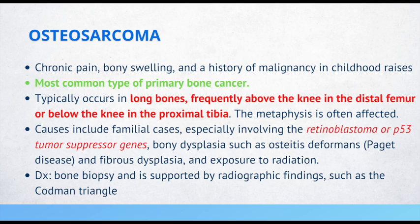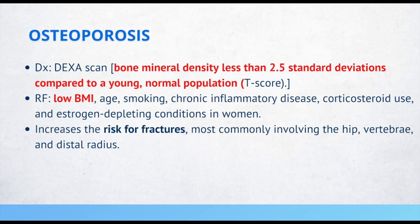Osteoporosis. A DEXA scan reveals bone density less than 2.5 standard deviations compared to a young normal population. Risk factors include low BMI, age, smoking, chronic inflammatory disease, corticosteroid use, and estrogen-depleting conditions in women. The top risk factor is low BMI, so if asked for the greatest risk factor in a clinical scenario, the answer will most likely be low BMI. Osteoporosis increases the risk for fractures, most commonly involving the hip, vertebrae, and distal radius.